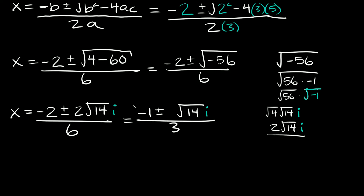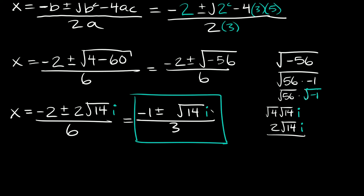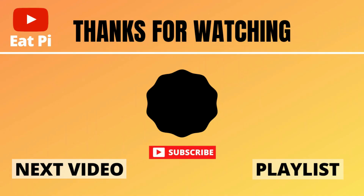So then this would be your final solution: x is equal to negative 1 plus or minus the square root of 14 times i, all over 3. If you found the video helpful, definitely leave a thumbs up below. And if you have any other questions or want to see any other examples, just let me know in the comment section below.